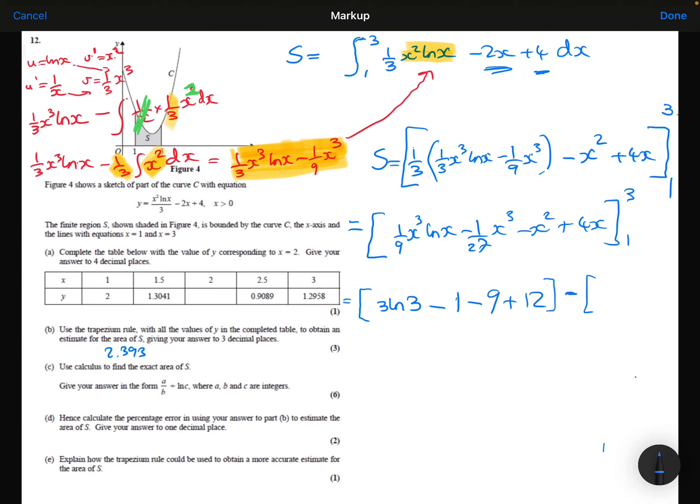Now substituting the 1 in. The 1 ninth times 1 cubed times ln 1 will be 0. The minus 1 over 27 times 1 cubed will be minus 1 over 27. Minus the 1 squared plus the 4 times 1. Simplifying this, we get 3 ln 3. We've got plus 2. We've then got a plus 1 over 27, a plus 1 and a minus 4.